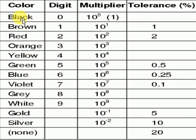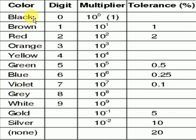We have to learn all these colors in a particular sequence: black, brown, red, orange, yellow, green, blue, violet, gray, white. All these must be remembered in the same sequence, and after that gold, silver, and none — meaning no color is present.